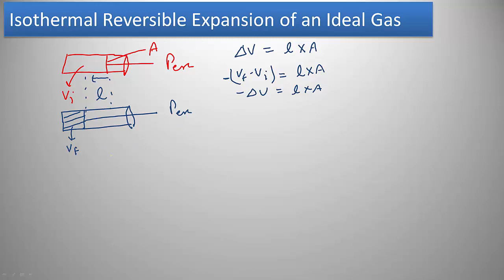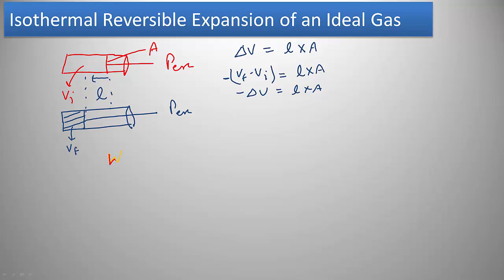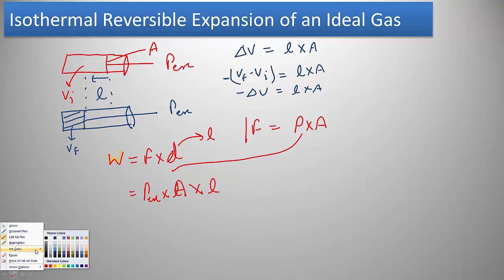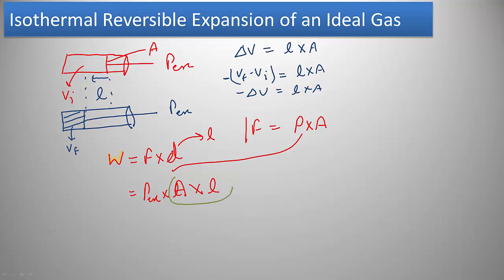Work is force times displacement. Displacement here is L because the piston has moved L. Force is nothing but pressure times area, so substituting this value: force equals external pressure times area. Therefore, work equals P external times L times A.